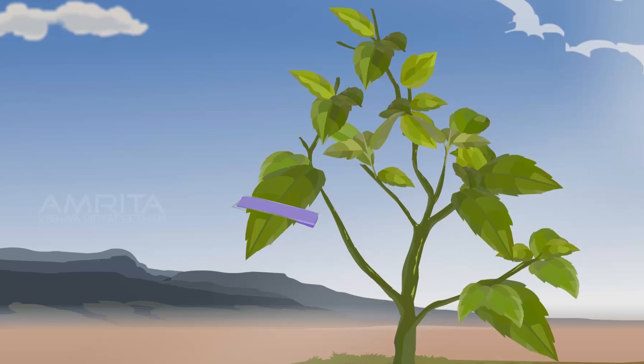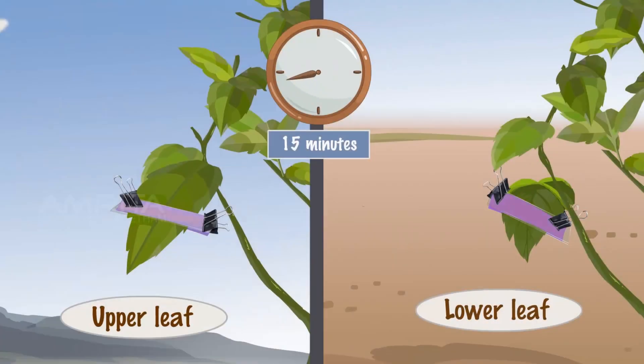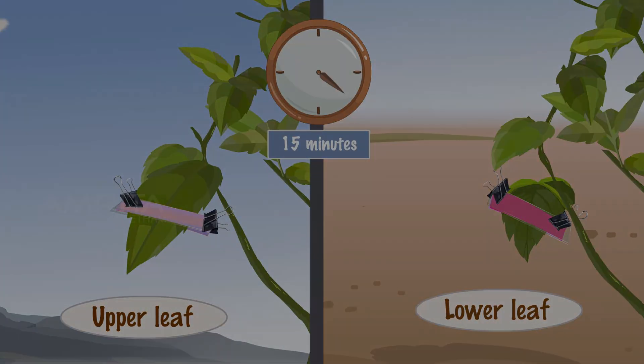Take two glass slides and place one over the upper and the other on the lower side of the leaf. Clip the slides together using clips. Note the time taken by the cobalt chloride paper to change from blue colour to pink.